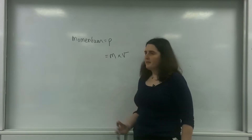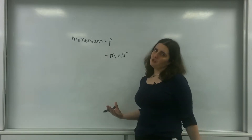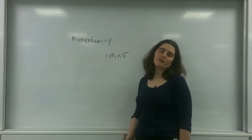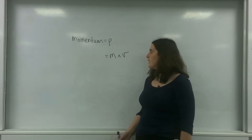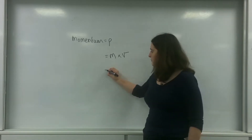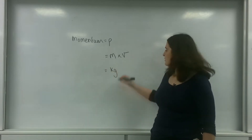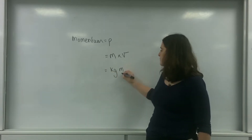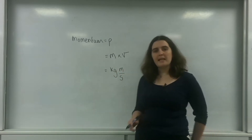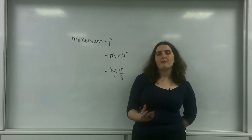Objects with really large masses moving very fast will of course have a lot of momentum. The units for mass are kilograms and velocity is meters per second, so kilograms meters per second is the unit for momentum.